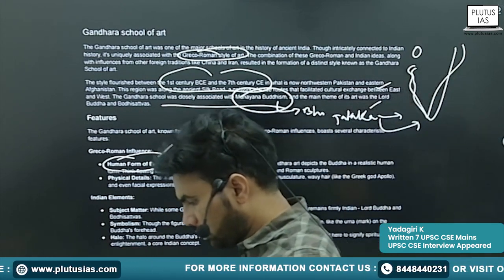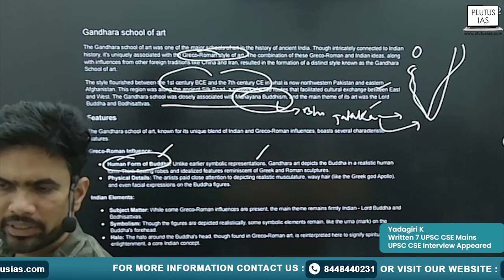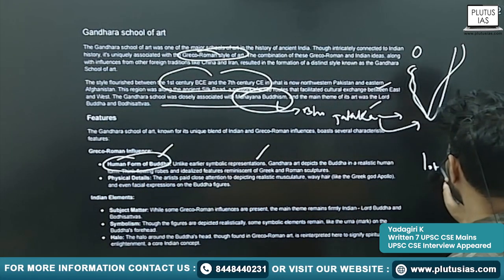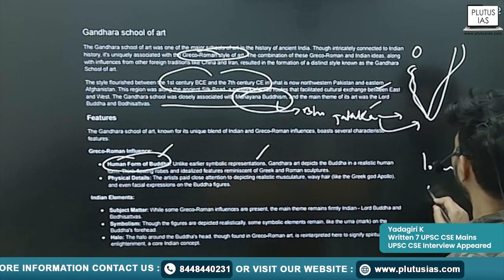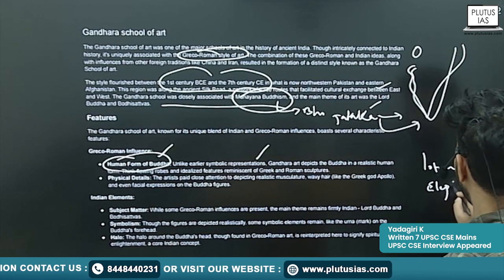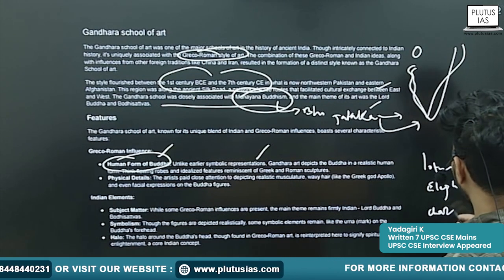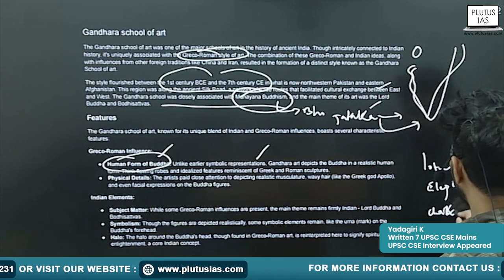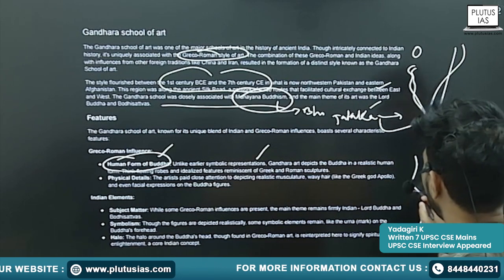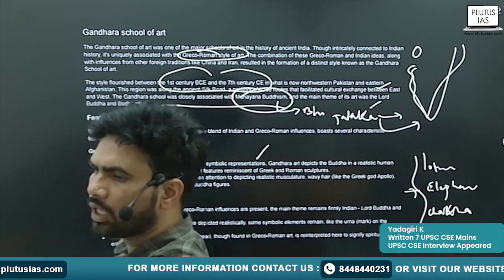Earlier, Buddha used to be represented with symbols like lotus, elephant, and the chakra. These depict the life events of Buddha. Buddha used to be depicted with these symbols, especially with the lotus and elephant.